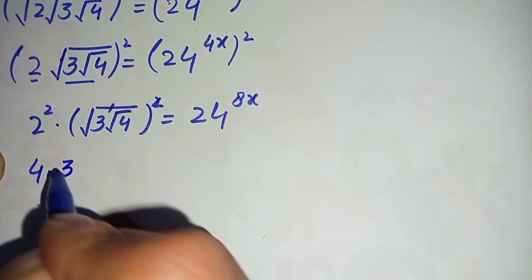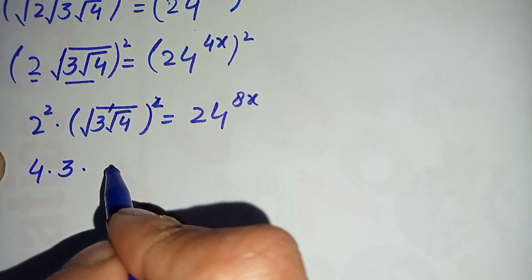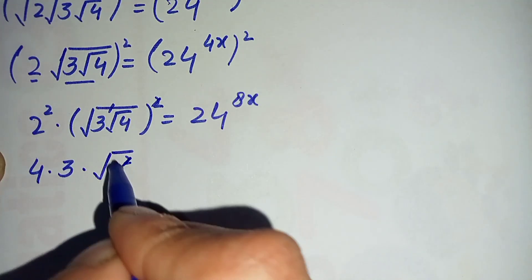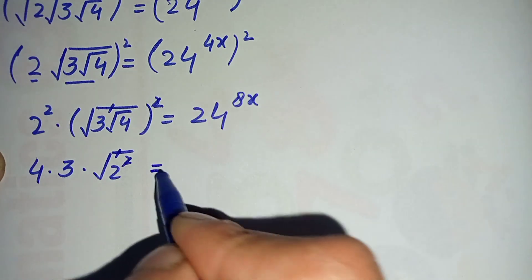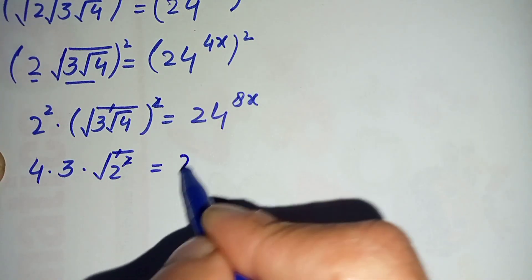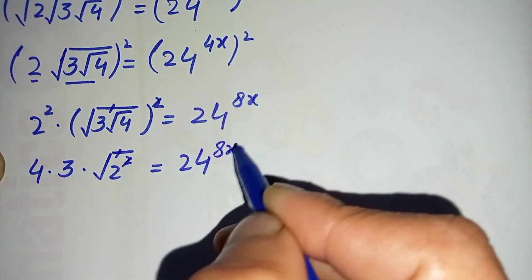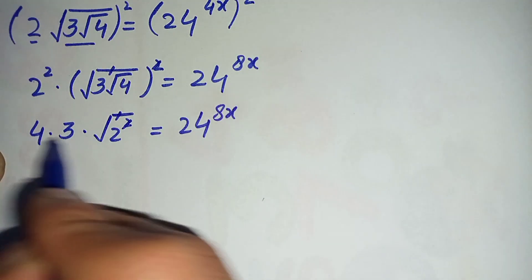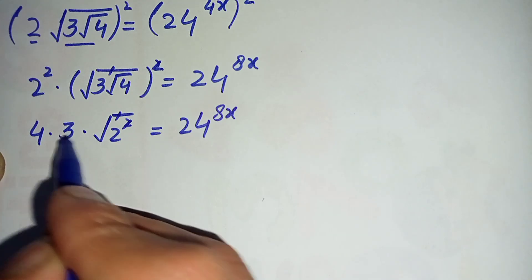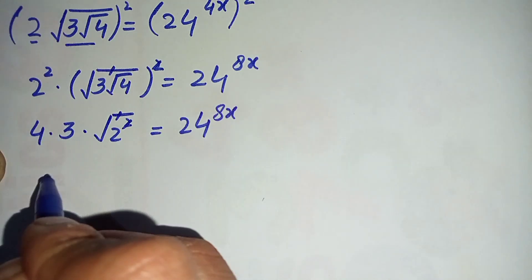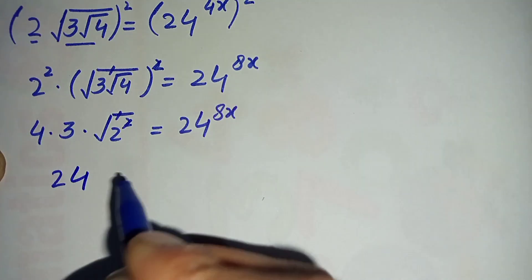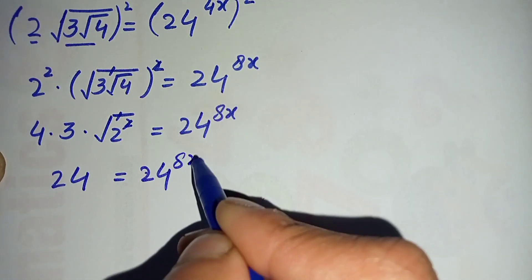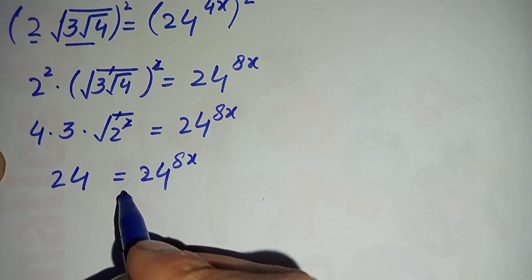This becomes 2 raised to power 2, which is 4, times 3, times — we can write 4 as 2 squared, so the square and square root cancel — leaving 2. We multiply these three numbers: 4 times 3 is 12, and 12 times 2 is 24.